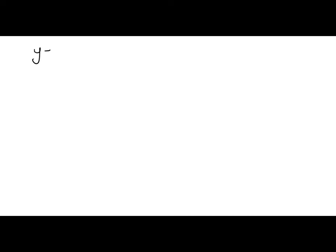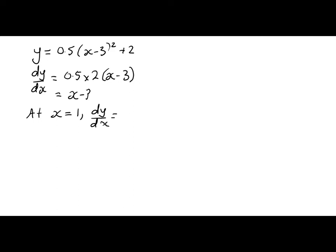How do we do that? Well, y is equal to 0.5 times x minus 3 squared plus 2. So we differentiate to get the equation of the gradient of the tangent first, right? So it's going to be 0.5 times 2 times x minus 3, which is just x minus 3. And then we say, well, we want to know what that gradient is at x equals 1. So dy by dx at x equals 1 will be 1 minus 3, which is negative 2. So the normal gradient is perpendicular. Perpendicular gradients multiply to negative 1. So it's going to be negative 1 divided by negative 2, which is 1 half.